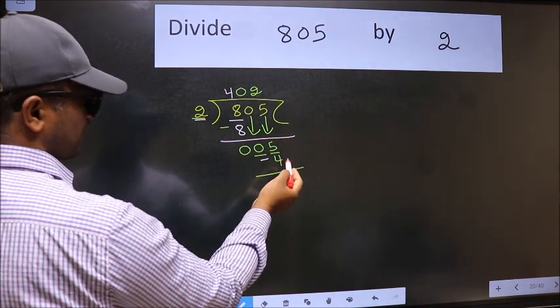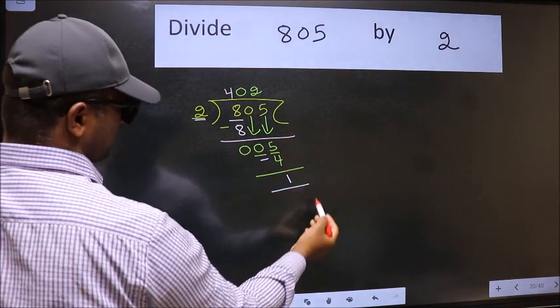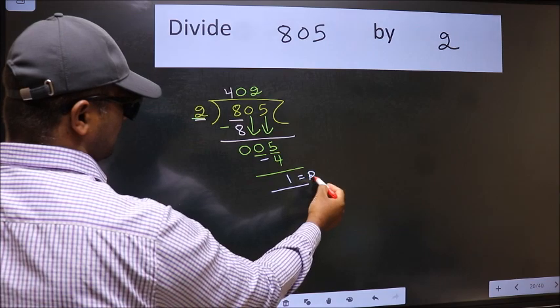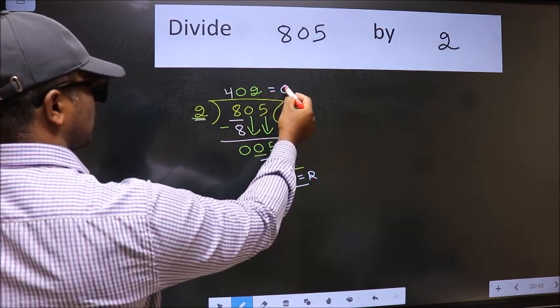No more numbers to bring it down. So we stop here. This is our remainder and this is our quotient.